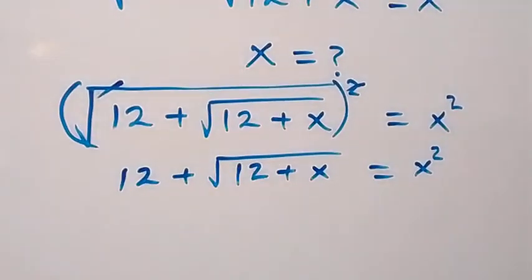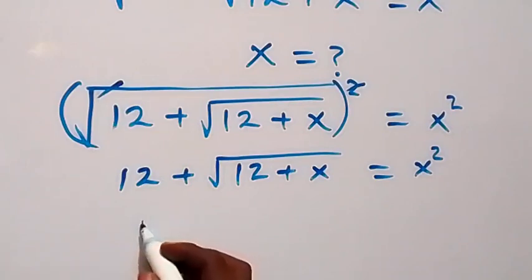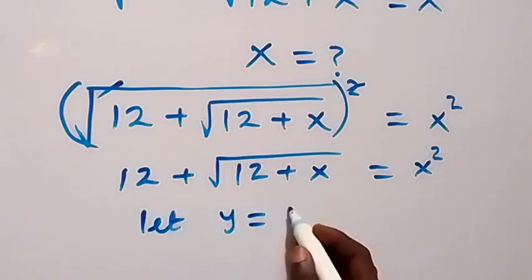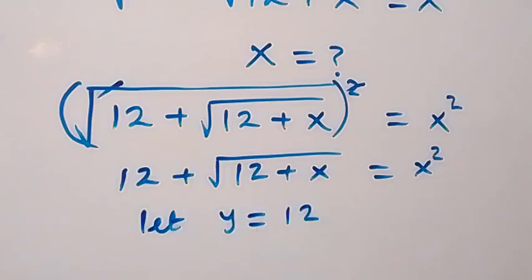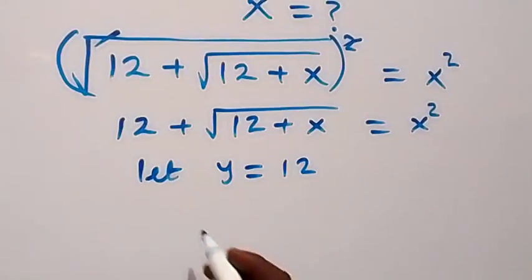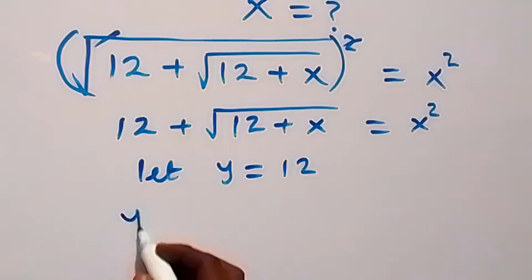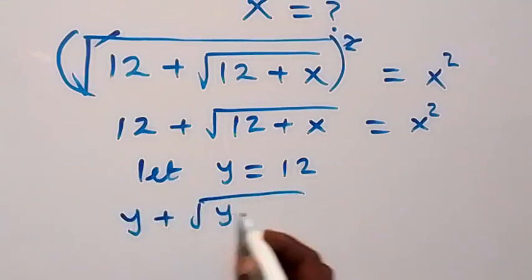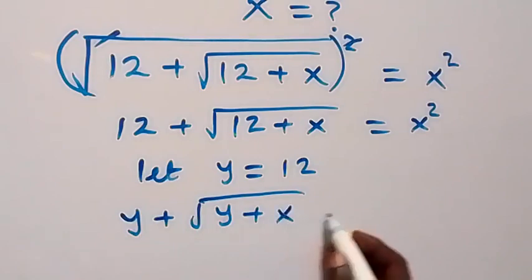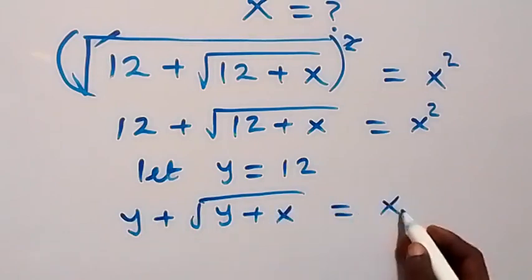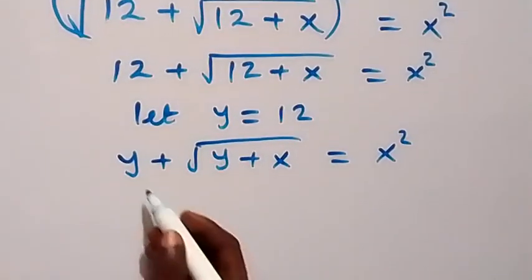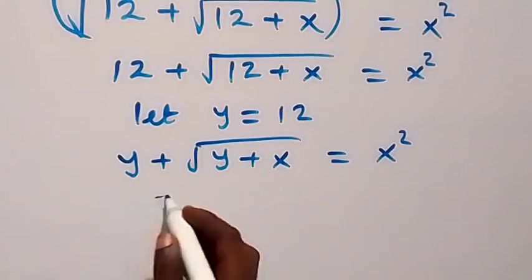From here, let's use a letter to represent 12. So let y be equal to 12. Then what we have here now becomes y plus square root of y plus x, then equals to x squared.